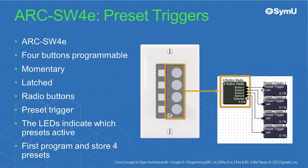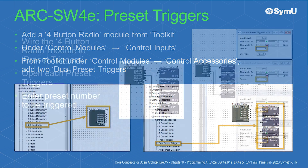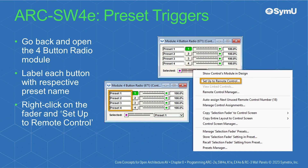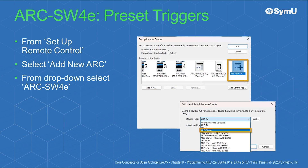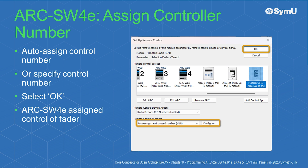The Arc SW4E features four buttons that are programmable as momentary, latched, or radio buttons. In this example, the Arc SW4E is programmed as a preset trigger; the LEDs indicate which of the four presets are active. To program the Arc SW4E buttons as preset triggers, first program and store four presets. Add a four-button radio module from the Toolkit under Control Modules > Control Inputs, then add two dual preset triggers under Control Accessories. Wire the four-button radio module to the preset triggers, open each preset trigger and enter the preset number, label each button with its preset name, then right-click the fader and select Setup to Remote Control. From the Setup Remote Control window, select Add New Arc, choose Arc SW4E, then either auto-assign or specify the control number and select OK.